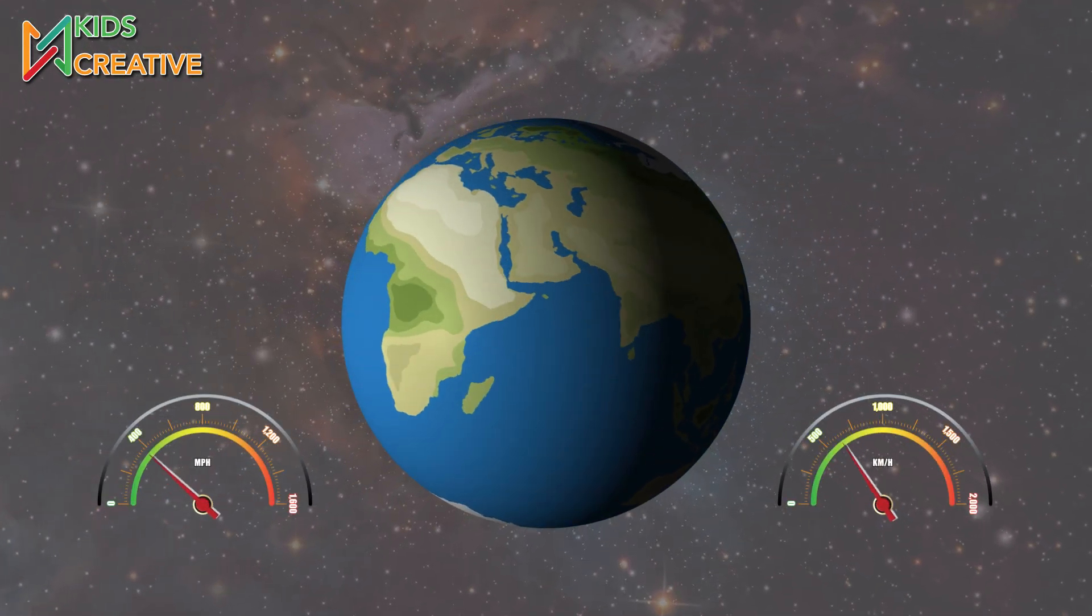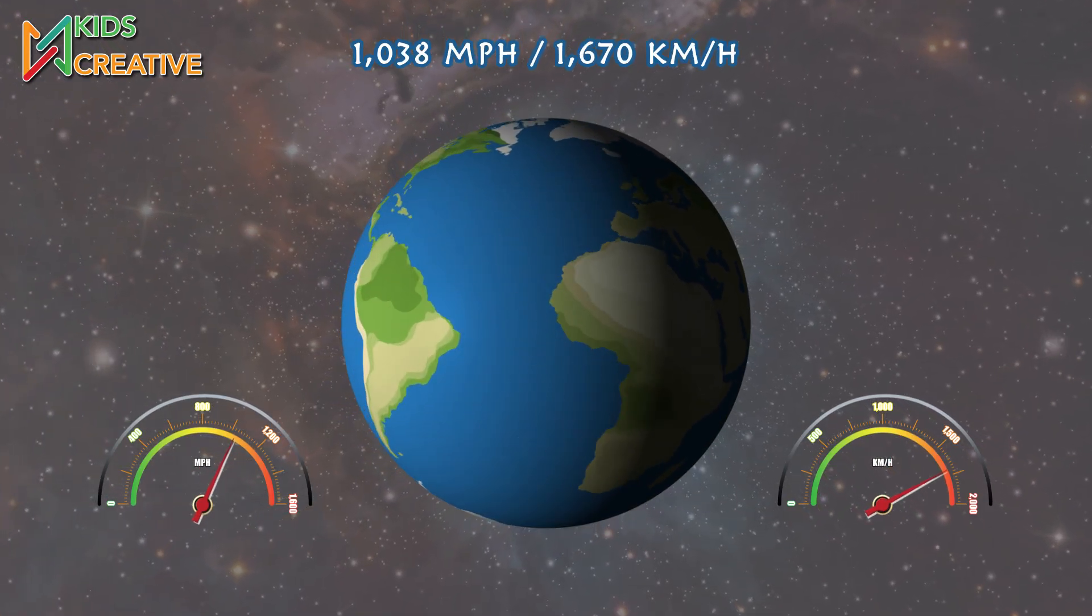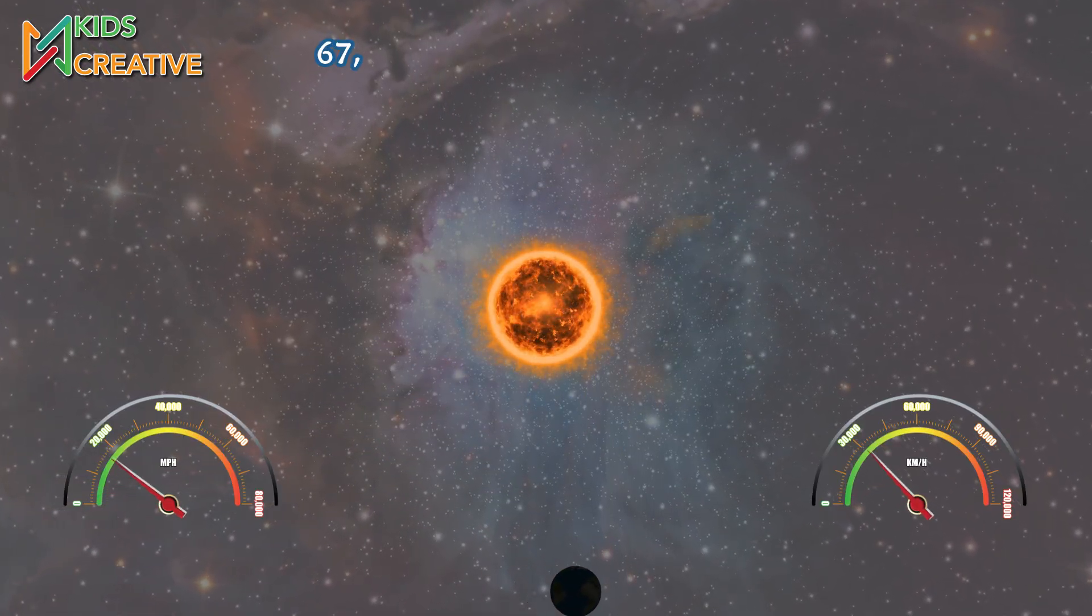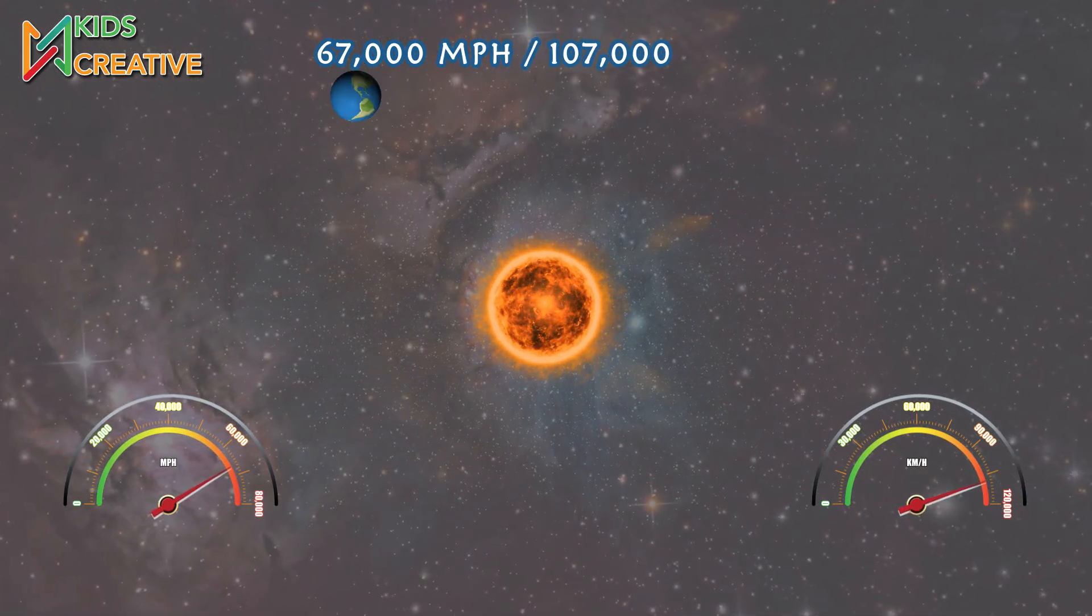Earth spins at 1,038 miles per hour, or 1,670 kilometers per hour, and orbits the Sun at 67,000 miles per hour, or 107,000 kilometers per hour.